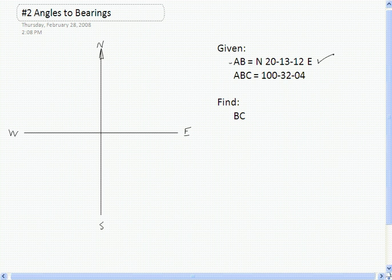The first thing to realize in doing this is that if bearing AB is north 20-13-12 east, then bearing BA is equal to south 20-13-12 west. So let's go ahead and set this up. We'll start by drawing roughly to scale, let's draw BA first.